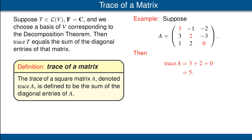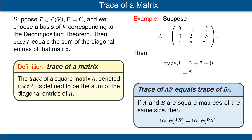At this stage we have defined the trace of an operator and the trace of a matrix, but we have not yet shown any connection between these two concepts. To help derive that connection, we will need the following result: if A and B are square matrices of the same size, then trace(AB) equals trace(BA). This result is a statement about the trace of matrices and has nothing to do with operators. Please read the proof of this result in the book.